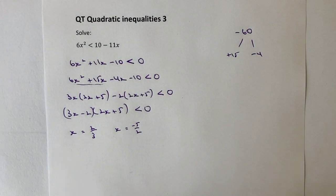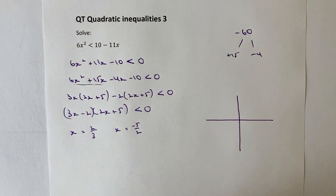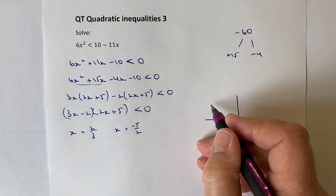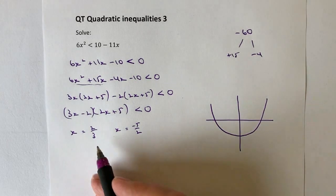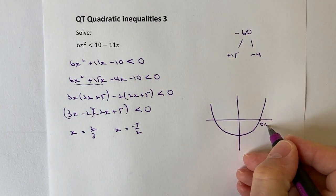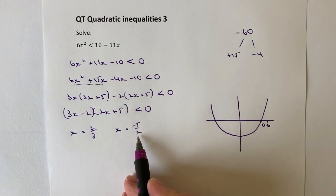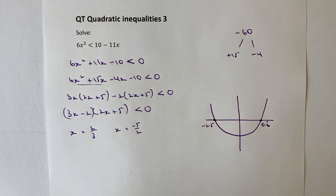So, if I then put that onto a graph, what I've got is a quadratic equation with two roots, one of which is going to be minus 5 over 2 and one of which is going to be plus 2 thirds. So, really this is 0.6 recurring or two thirds if you prefer. And this is minus 5 over 2, so this is going to be minus 2.5.